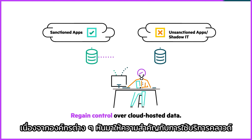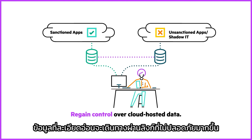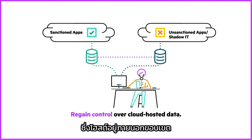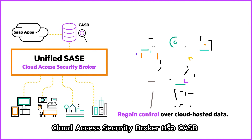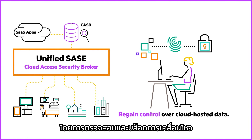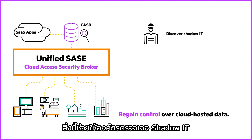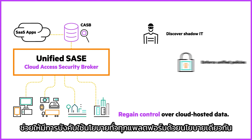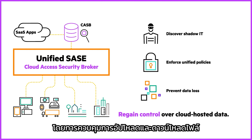As more organizations adopt cloud services, protecting cloud-based data is key. More sensitive data travels over unsecured links hosted outside the perimeter in sanctioned or unsanctioned cloud services. Cloud Access Security Broker, or CASB, lets organizations detect and prevent potential data breaches by monitoring and blocking unsafe data movements. It helps organizations discover shadow IT, enforce unified policies across platforms, and prevent data loss through controlled file uploads and downloads.